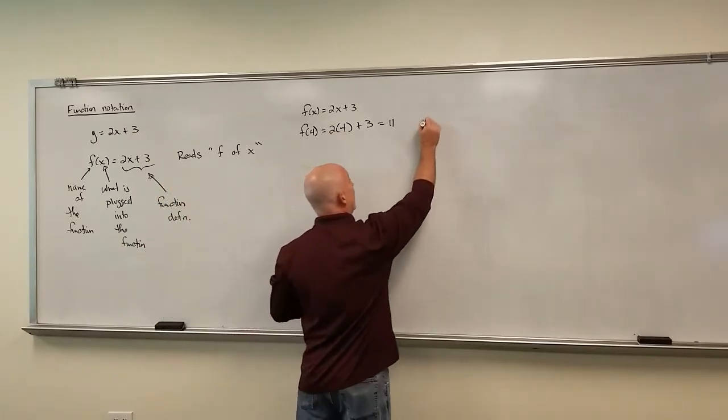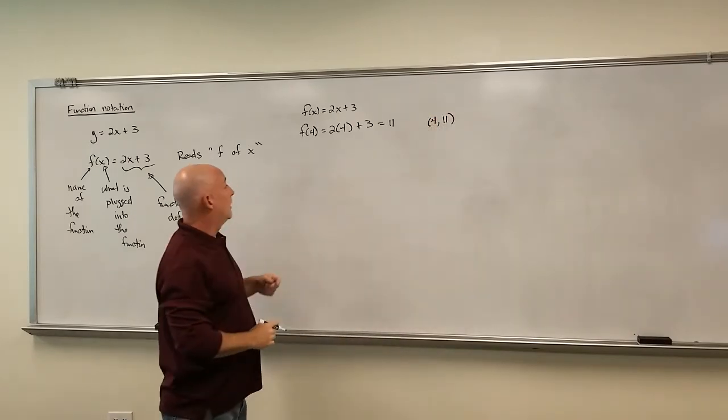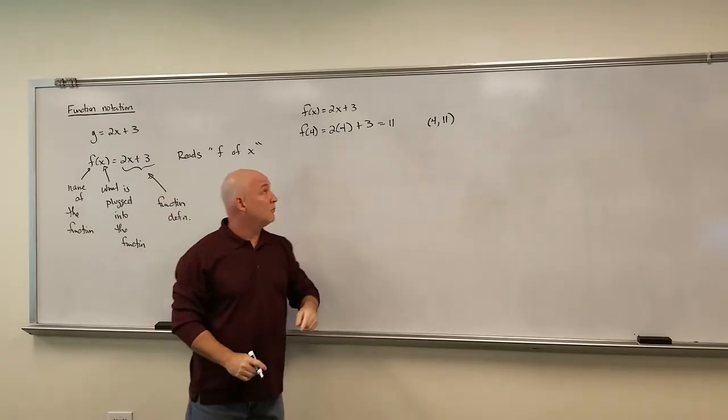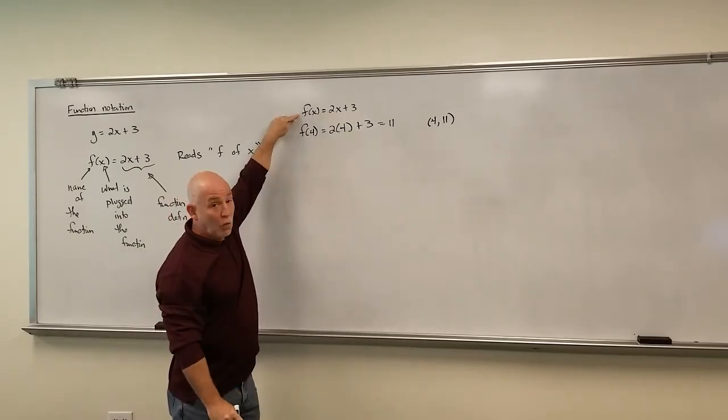From what we've seen in the past, we actually found one point on this line, right? Because it's just being a line. We found the point, plugged in a 4, got out an 11. Because remember, this is the same thing as Y equals.